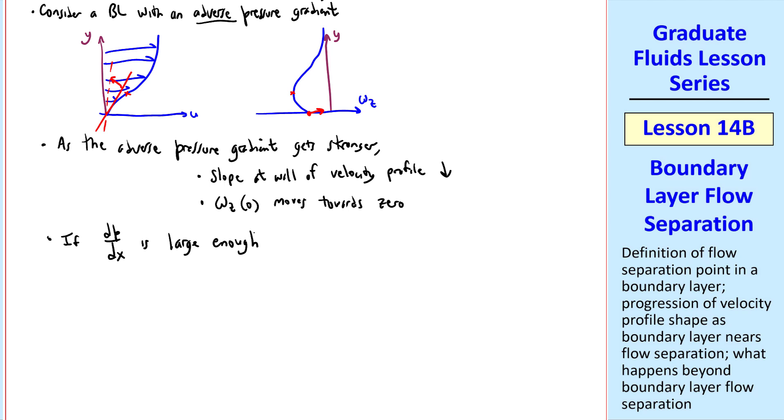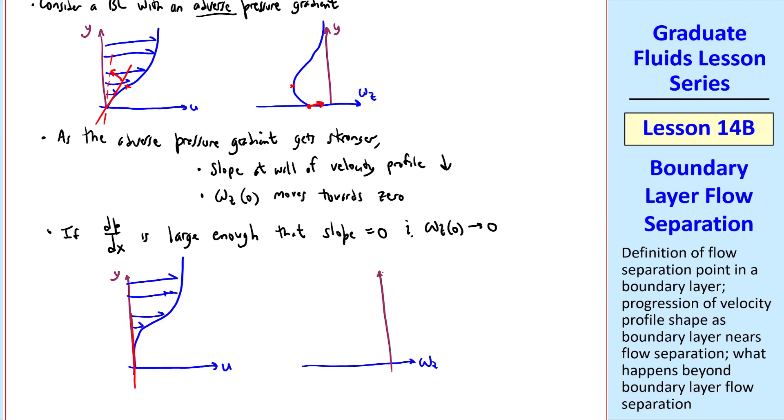As dp dx keeps increasing, it gets large enough that the slope of the velocity profile is 0, and omega z at the origin goes to 0. The velocity profile will look something like this, where the slope right at the wall is actually 0. And the corresponding vorticity plot has 0 vorticity at the wall, and then asymptotes to 0. There's still an inflection point.